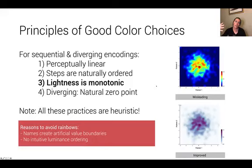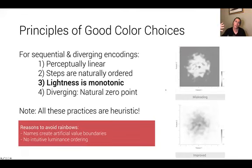The other problem with rainbows is that lightness is not monotonic. If you look at how lightness varies in a rainbow, we start really dark with blues, get very bright at the yellows, then go back to dark at the reds. This means that looking at just the lightness profile of the data, we have a much harder time resolving the actual value changes — our brain can't get onto the fine-grained details because the lightness isn't there to support it.